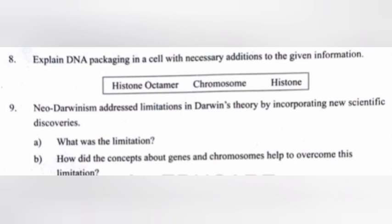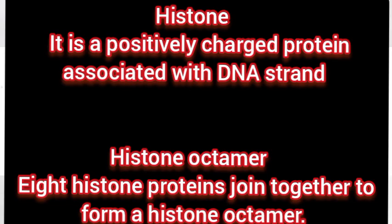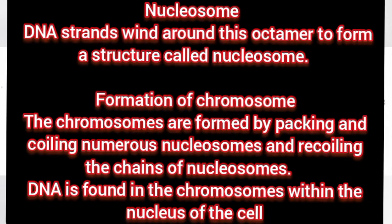Question 8: Explain DNA packaging in a cell. Answer: Histone is a positively charged protein associated with the DNA strand. Eight histone proteins join together to form a histone octamer. The DNA strand winds around this octamer to form a structure called a nucleosome. Chromosomes are formed by packing and coiling numerous nucleosomes and recoiling the chains of nucleosomes. DNA is found in the chromosomes within the nucleus of the cell.